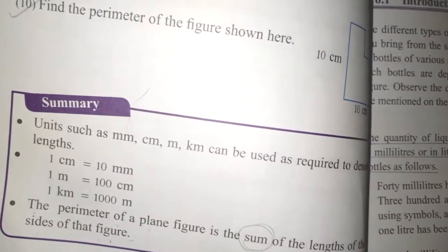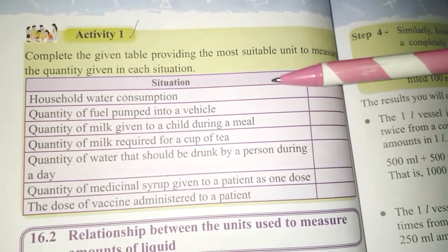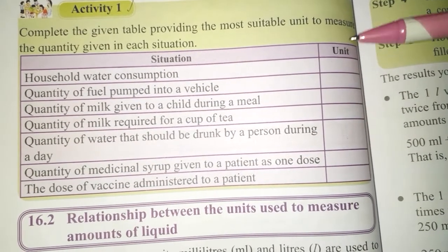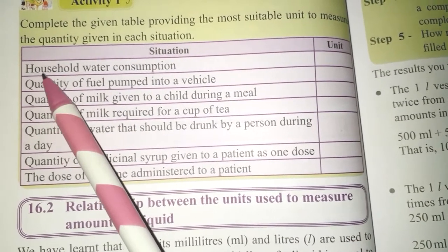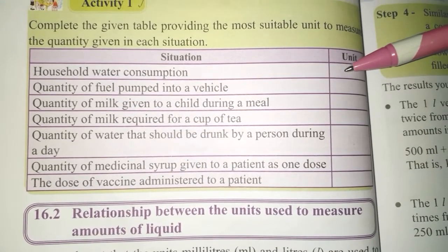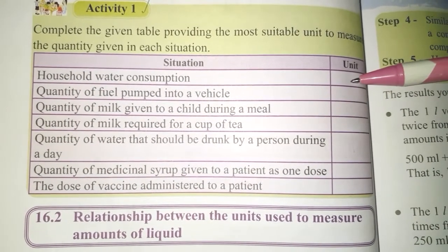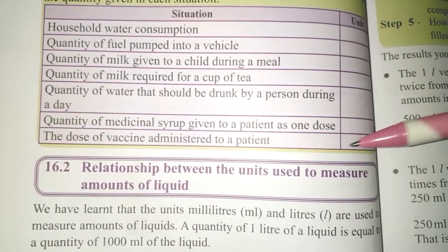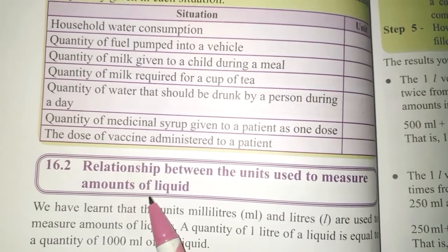Now please turn to page 62. Activity 1 is for homework — you don't need to copy this; you can write the answer in the given column. They have asked you to write which unit is used to measure each quantity. I'll tell you the first one: household water consumption — since we use a large amount, you have to write liters. Now look at the rest. The relationship between the units used to measure amounts of liquids.